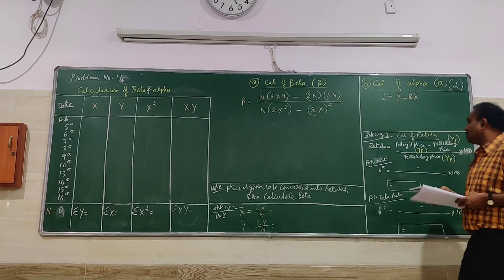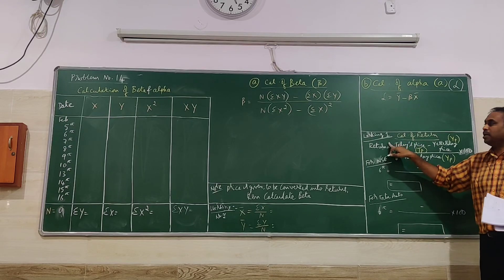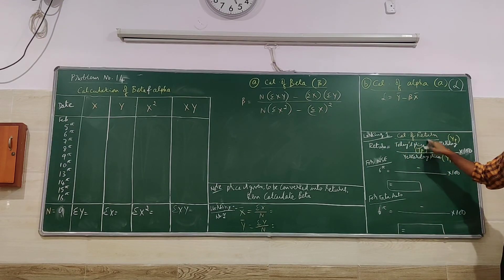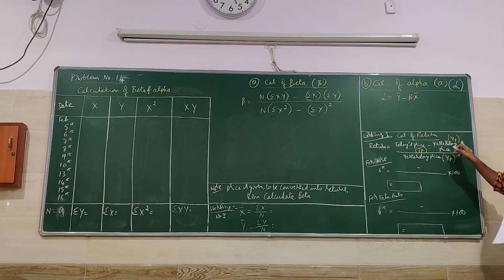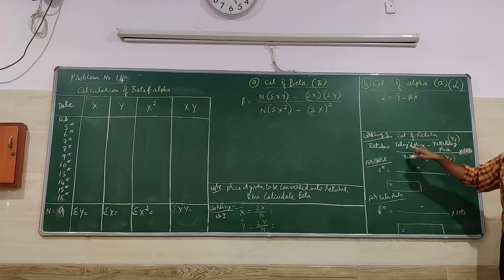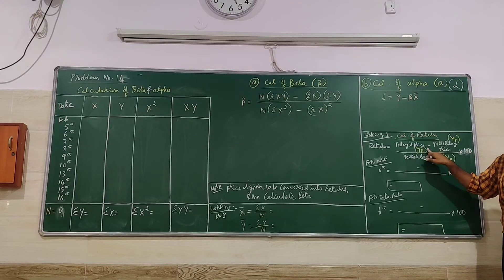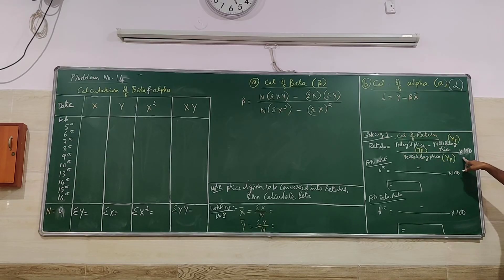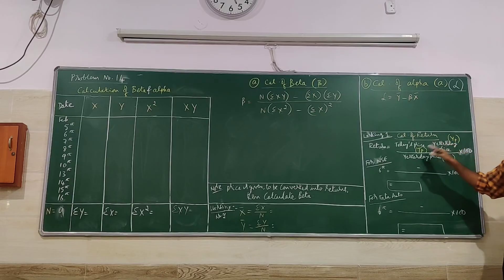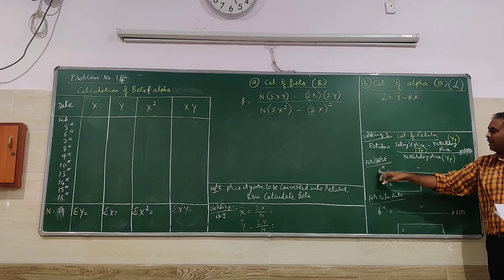The question now is: when price is given, how to convert that into returns? Working number 1 — calibration of return. Return is equal to: TP minus YP, divided by YP, multiplied by 100. TP is nothing but today's price; YP is nothing but yesterday's price. Returns should always be in percentage, so we multiply by 100.